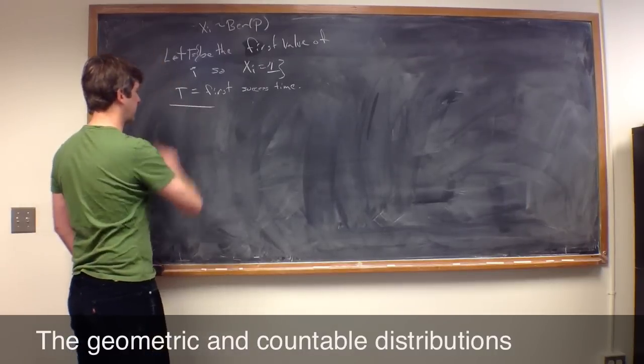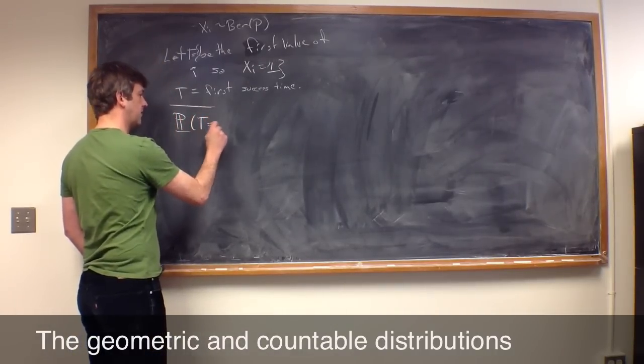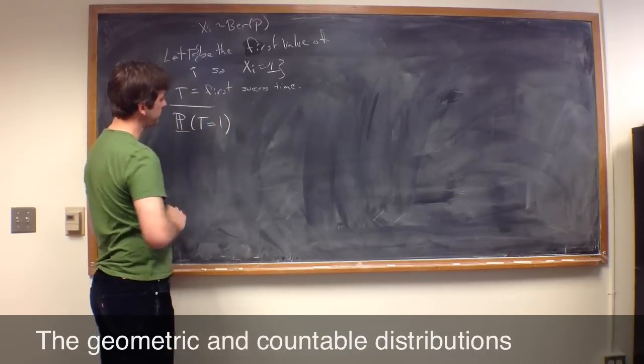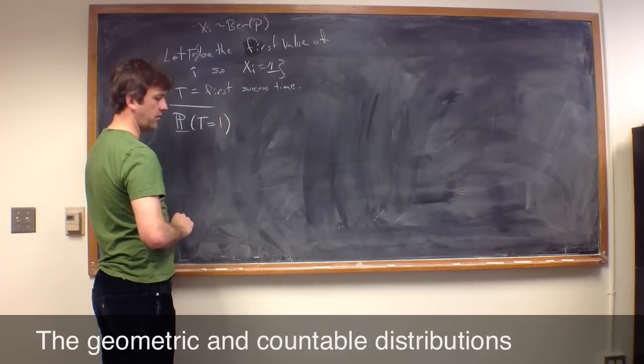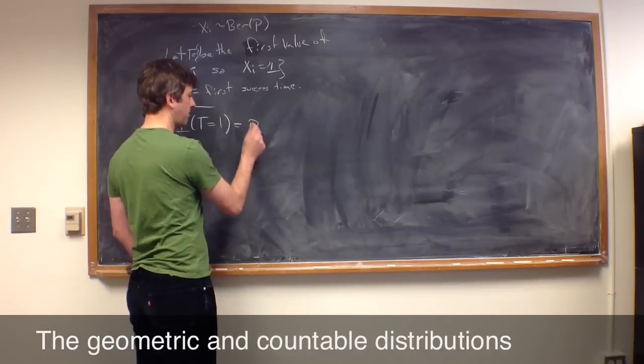Well, let's think about that. What's the probability that t equals 1? Well, the way that you end up with t equals 1 is you just get a head on the first hit. So the probability that happens is p.